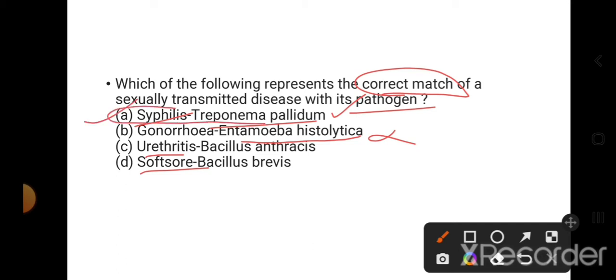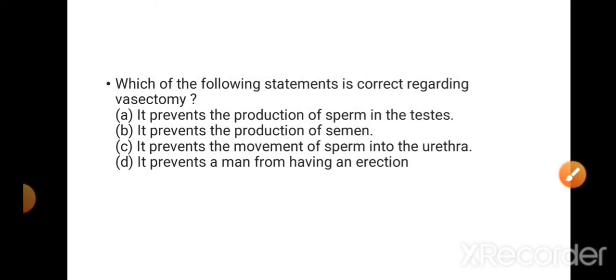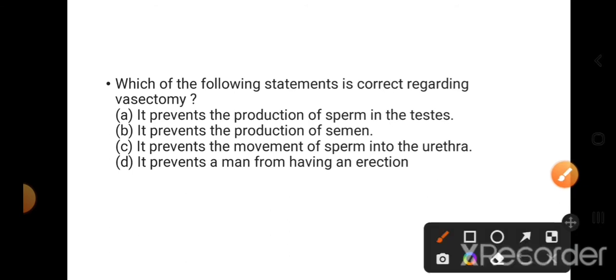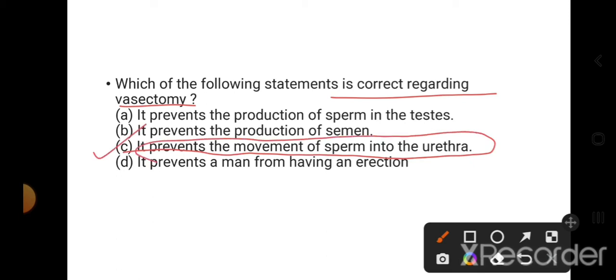Which of the following statements is correct regarding vasectomy? Vasectomy - the vas deferens is cut or tied. Production of sperm will happen, but it prevents the movement of sperm into the urethra. Sperm won't go into the urethra, so this is the right answer. The other options like prevents production of sperm, prevents production of semen, prevents a man from having erection - these are wrong statements.